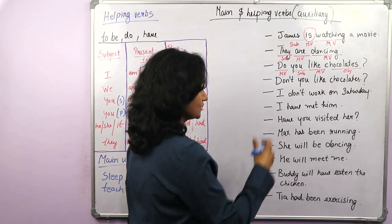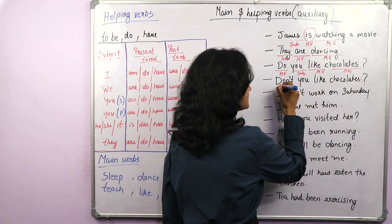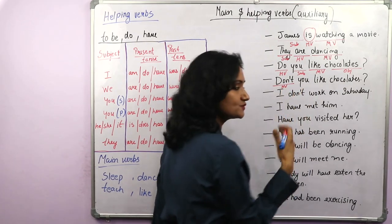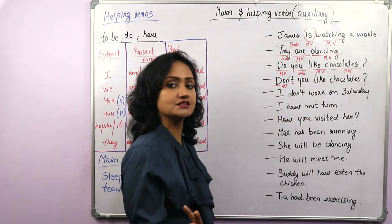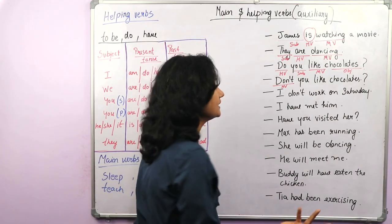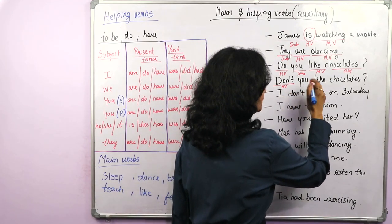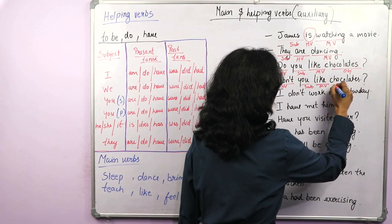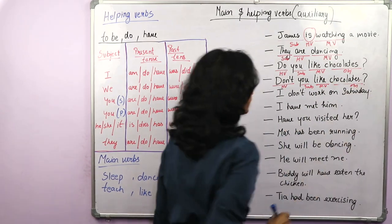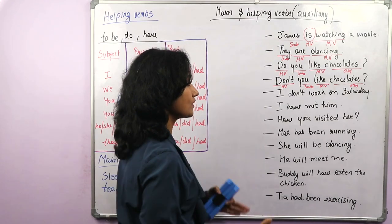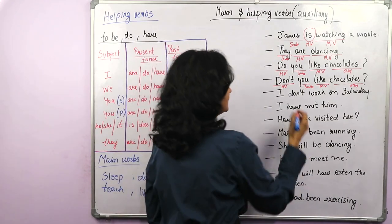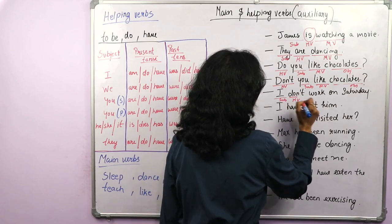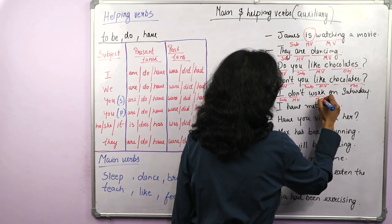Let's look at the negative sentence also. 'Don't you like chocolates?' Here the helping verb is do not — do is the verb, not is not the verb. You is the subject, like is the main verb, chocolates is the object. 'I don't work on Saturday' — I is the subject, do is the helping verb, and work is the main verb.